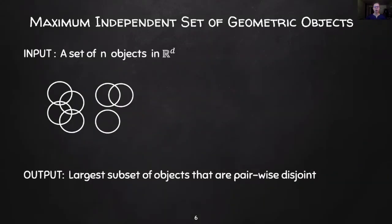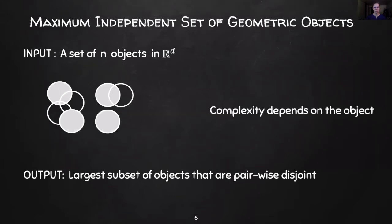In light of strong hardness of approximation results for general graphs, in this work we focus on a special case of MIS of geometric objects. For instance, we are given a set of n disks in the plane, and our goal is to now find the largest set of disks that are pairwise disjoint. Interestingly, the computational complexity now varies based on geometric objects we consider.